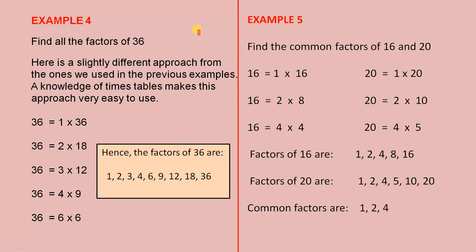Example 4: find all the factors of 36. Here is a slightly different approach. A knowledge of times tables makes this very easy to use. 36 is 1 times 36. The next number is 2, so 36 is 2 times 18. Then 36 is 3 times 12. Next, 36 is 4 times 9. Now 5 doesn't work because 5 doesn't divide into 36 evenly. But 6 works — 36 is 6 times 6.